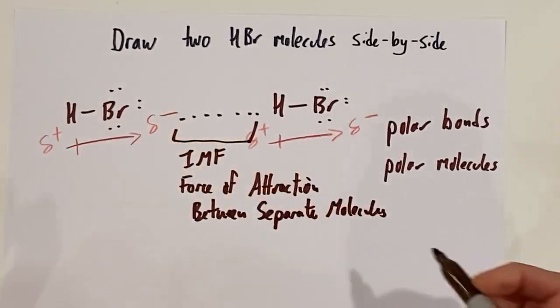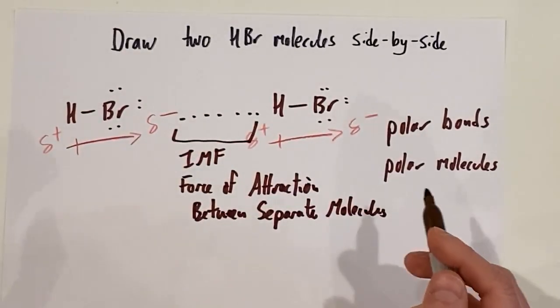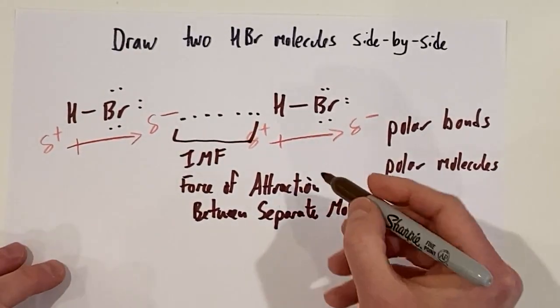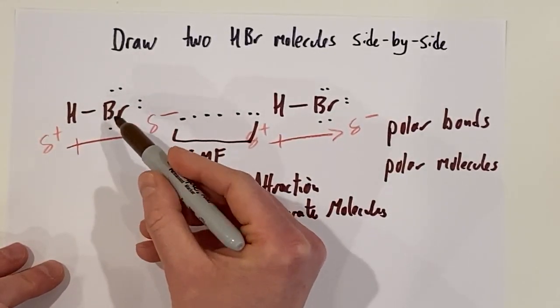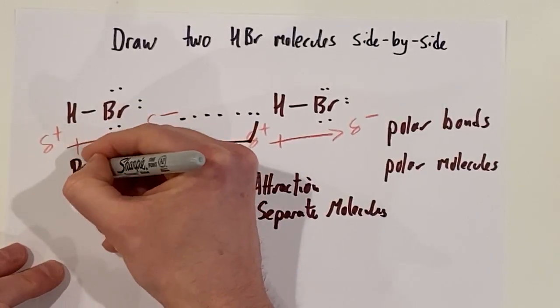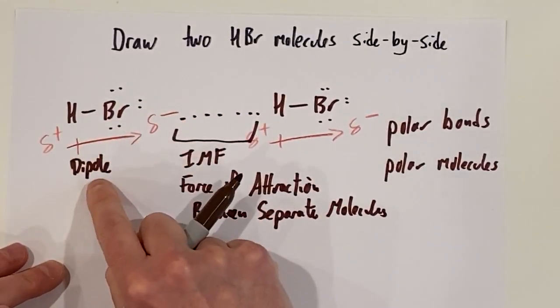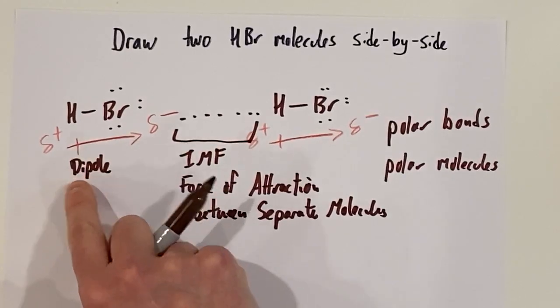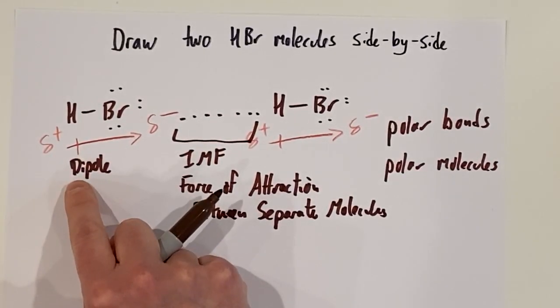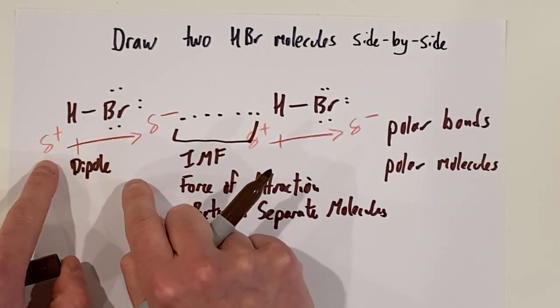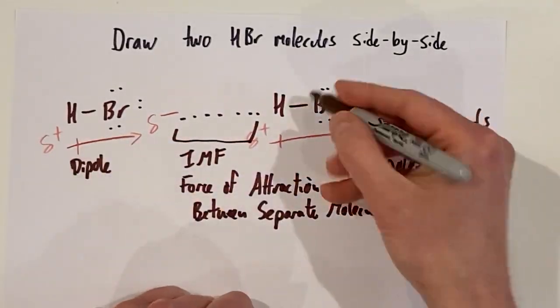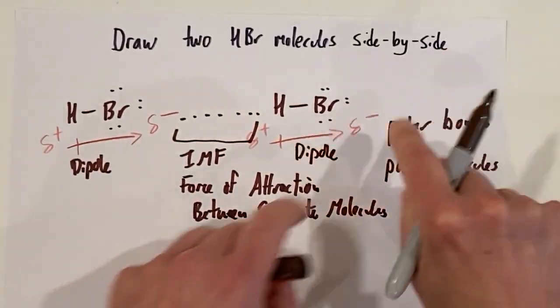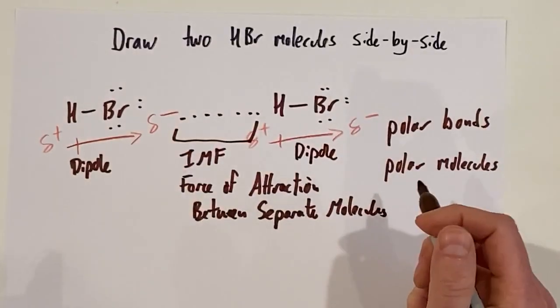The negative and positive attract. What kind of IMF do we have? Another name for this polar molecule, or this kind of polar molecule, is a dipole. Why is it a dipole? The prefix di- means two, carbon dioxide, CO2. Here, we've got a pole with two ends, the negative end and the positive end. We've got a dipole. Over here, this HBr molecule, identical, another dipole. Partial negative, partial positive.